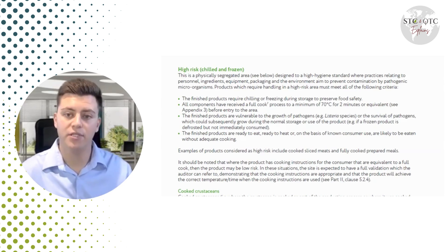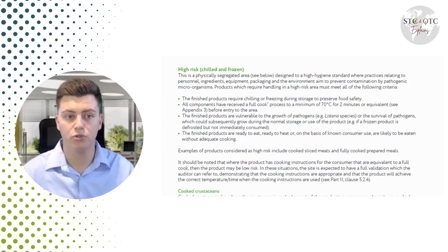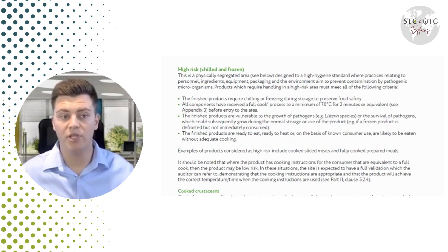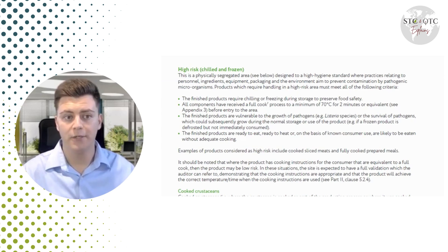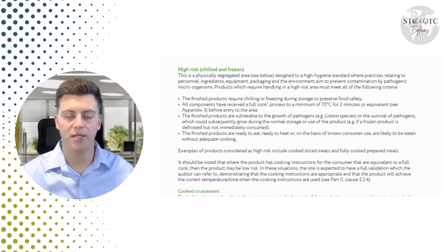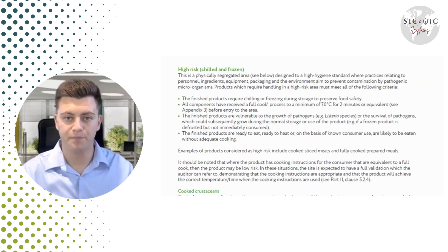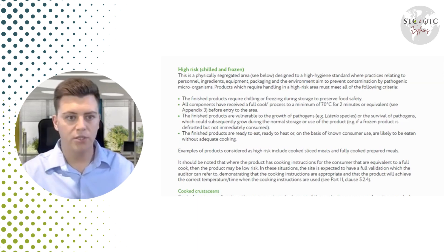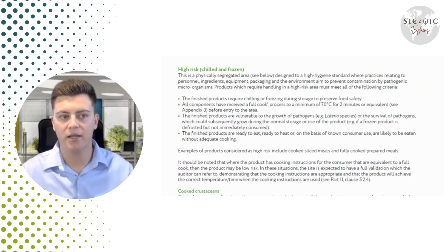Today we're focusing on high risk and high care zones. Some of you might remember the old BRCGS standard used to include a decision tree to help determine which zone your products should be packed in. However, it's no longer available — it was causing some confusion where people with the same product and same processes were falling into different production risk zones. They kept the same definitions, and this is what we're going to be focusing on today.